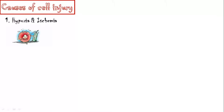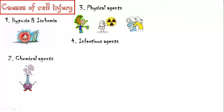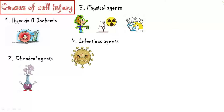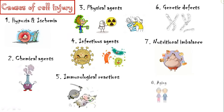These cells undergo death either by necrosis or apoptosis. Causes of cell injury include hypoxia and ischemia, chemical agents, physical agents like electric shock, radiation and mechanical trauma, infectious agents like viruses and bacteria, immunological reactions like autoimmune diseases, genetic defects, nutritional imbalance, and aging.